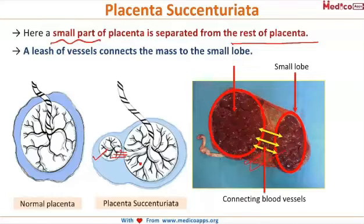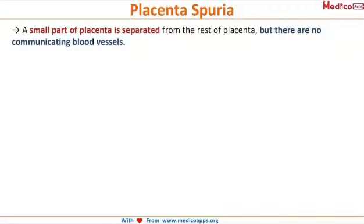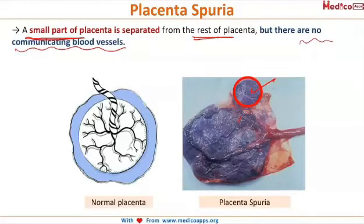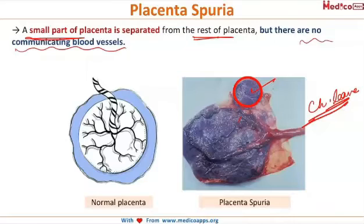Similar to placenta succenturiata is placenta spuria. In this also, a small part of the placenta is separated, but the difference is there are no communicating blood vessels between the accessory lobe and the main mass. This accessory lobe is assumed to develop from activated villi on the chorion laeve, which normally is a smooth part adjacent to the decidua capsularis.